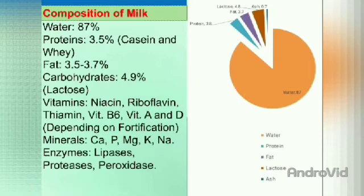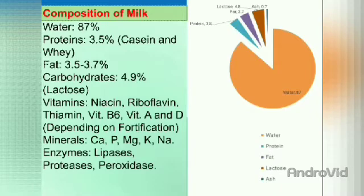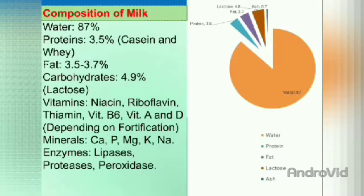The fat percentage in milk is 3.5 to 3.7%, and carbohydrates — that is lactose — is 4.9%. Milk also contains some vitamins: niacin, riboflavin, thiamine, vitamin B6, vitamin A, and vitamin D, as well as fat-soluble vitamins A, D, E, and K. Milk also contains minerals such as calcium, phosphorus, magnesium, potassium, and sodium, and enzymes including lipases, proteases, and peroxidases.